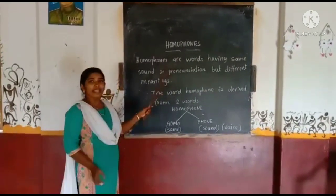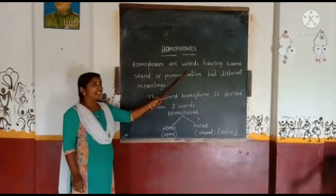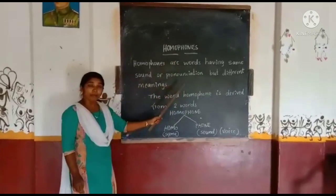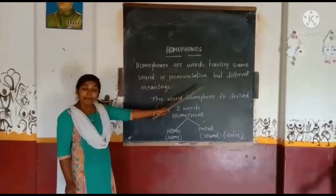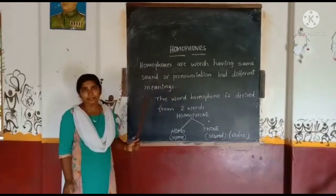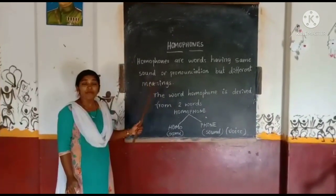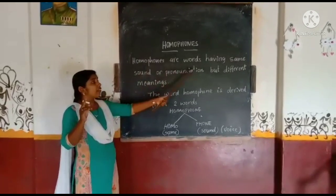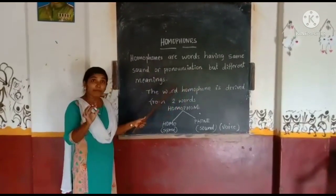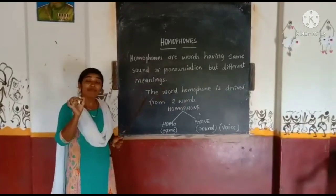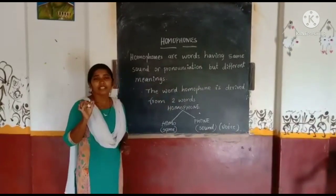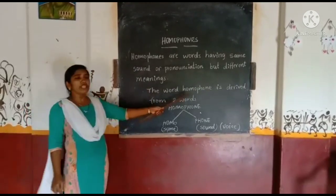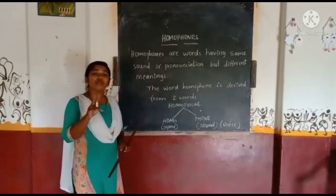Look at the word. Homophones are words having the same sound or pronunciation but of course different meanings. Homophones are words which have the same sound but different meaning.